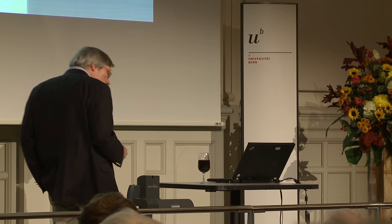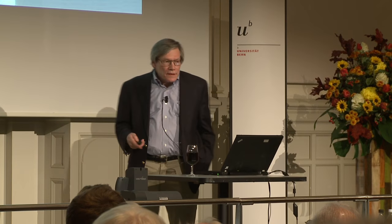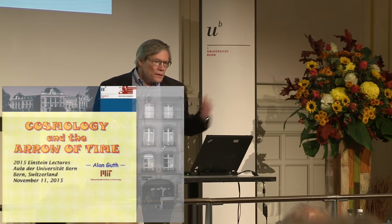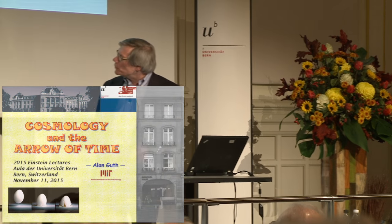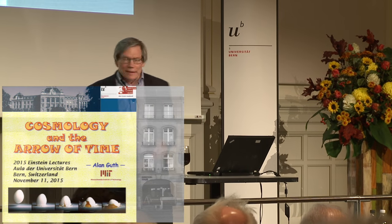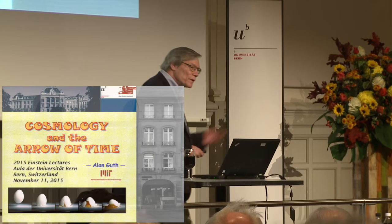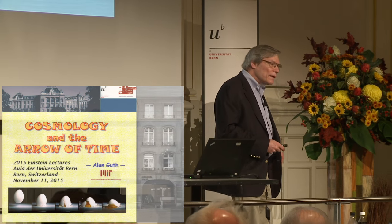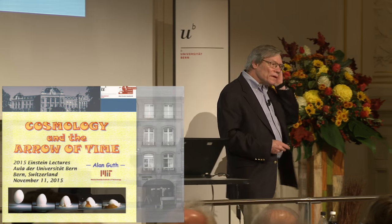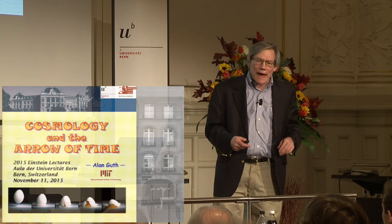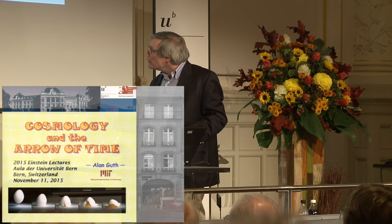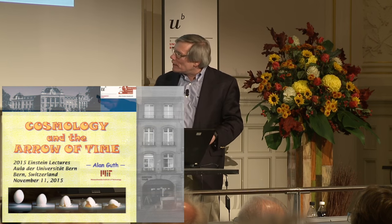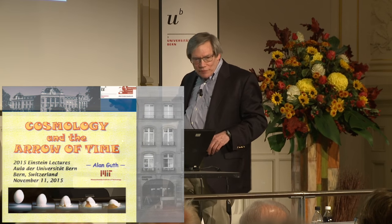The key issue is that when we observe things happening around us, there is certainly a very clear arrow of time, illustrated for example by what happens when an egg hits a table. We don't have any ambiguity in our minds when we look at those pictures in what order they happened. It's perfectly clear — you would never imagine that it could possibly happen from right to left. It only happens from left to right.